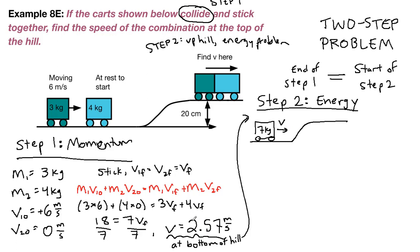moving at the bottom of the hill at 2.57 meters per second. It will roll up the hill, still being the same mass, and we have a final velocity over there.